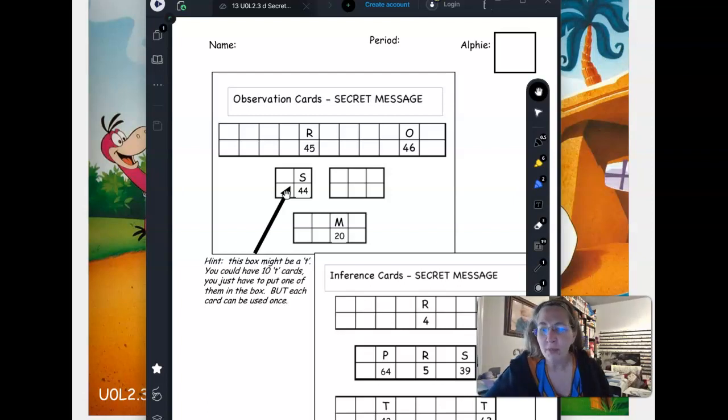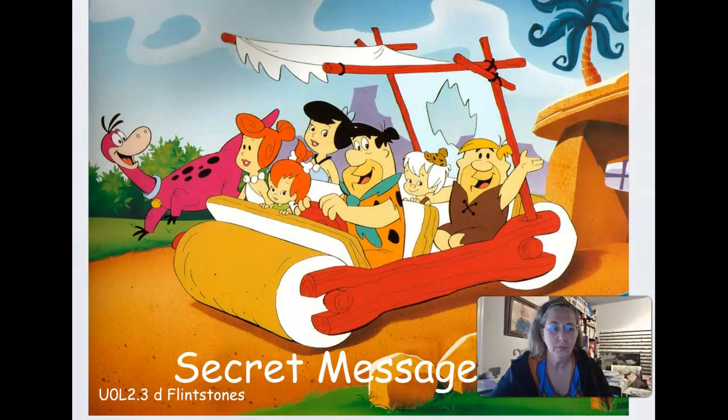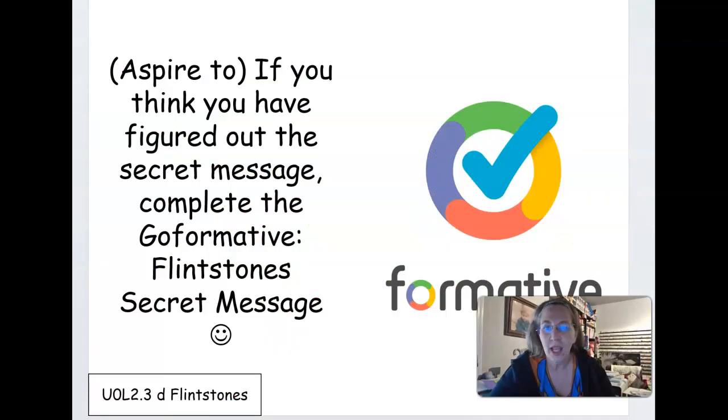Once you think you figured out both messages, you're going to go to GoFormative and put in the secret message. You have to have the worksheet completed and the GoFormative to get credit for this challenge Aspire to activity. You can take your paper home with you if you want to. I hope this is going to be fun for you and I hope you challenge yourself. Have fun!